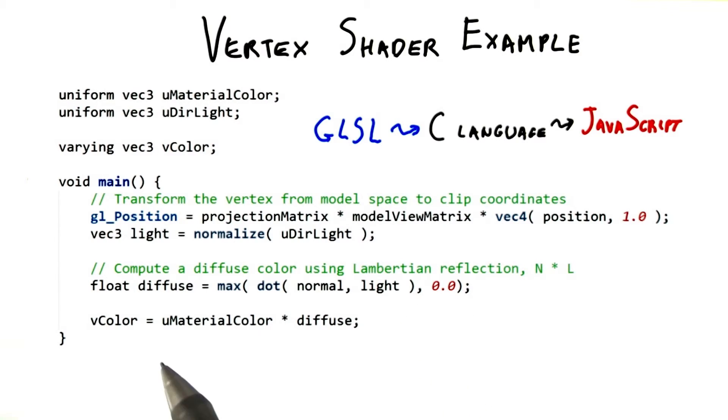The final line of the program itself computes the output color, called V color, by multiplying the color by the diffuse contribution.